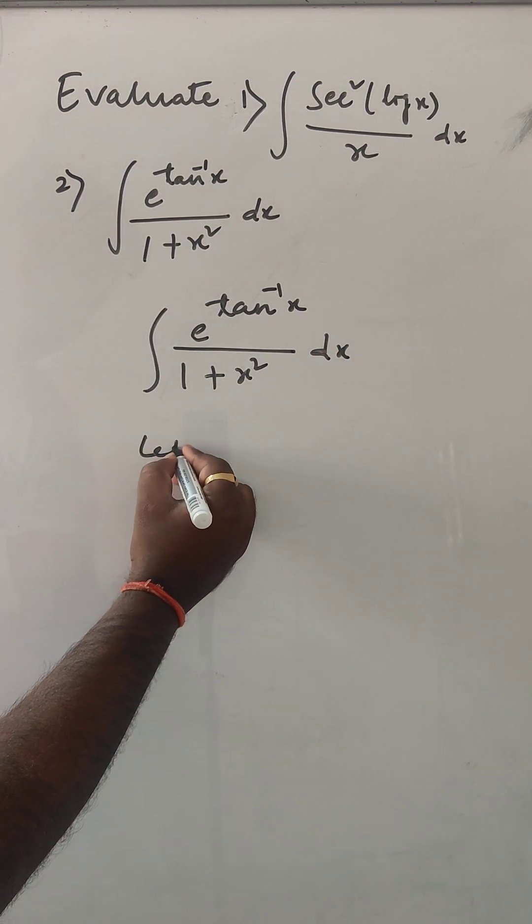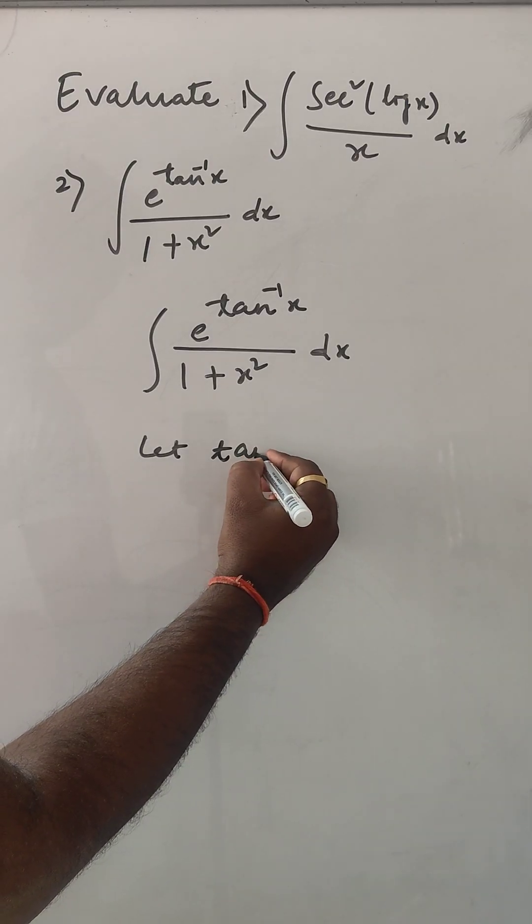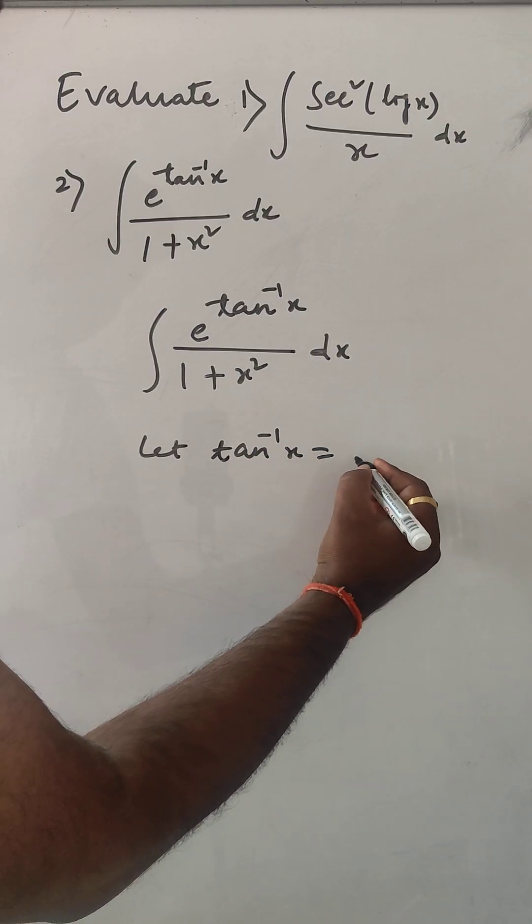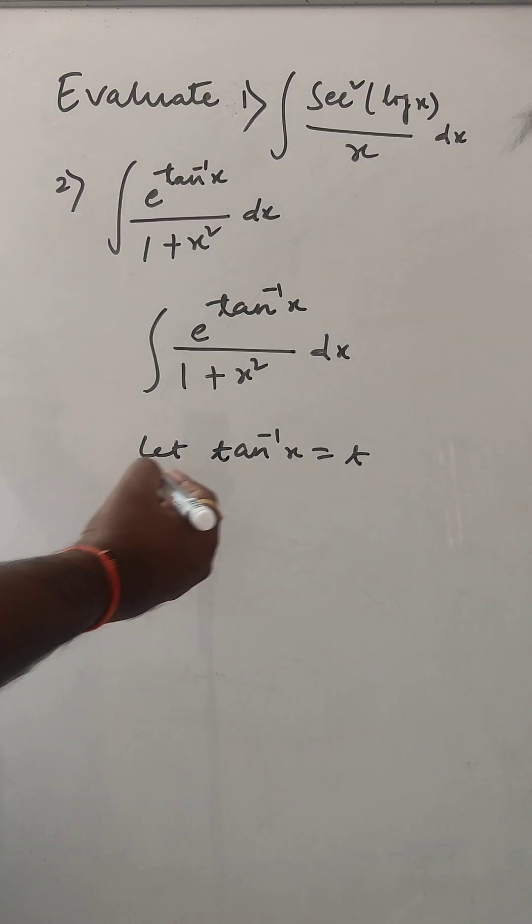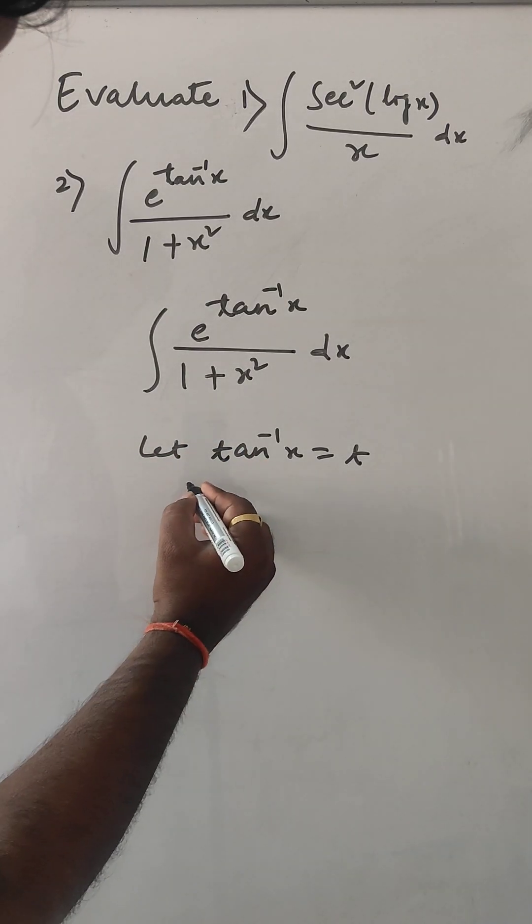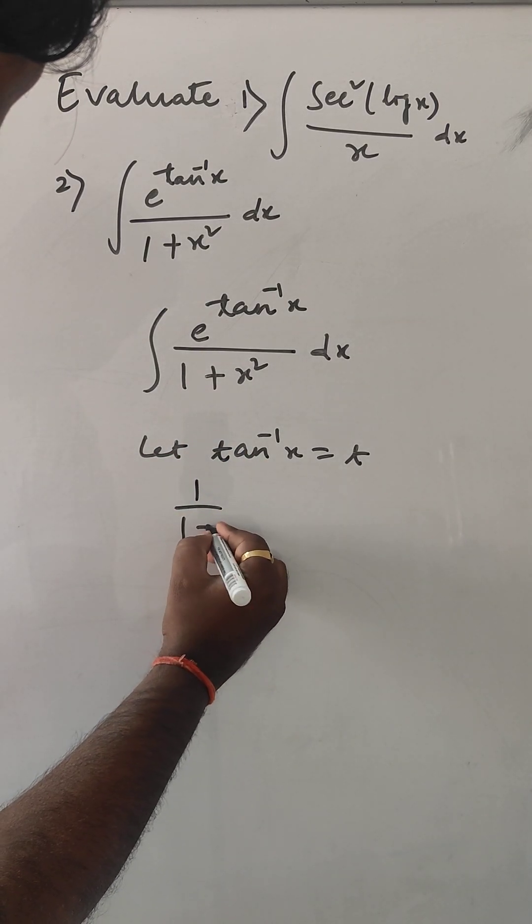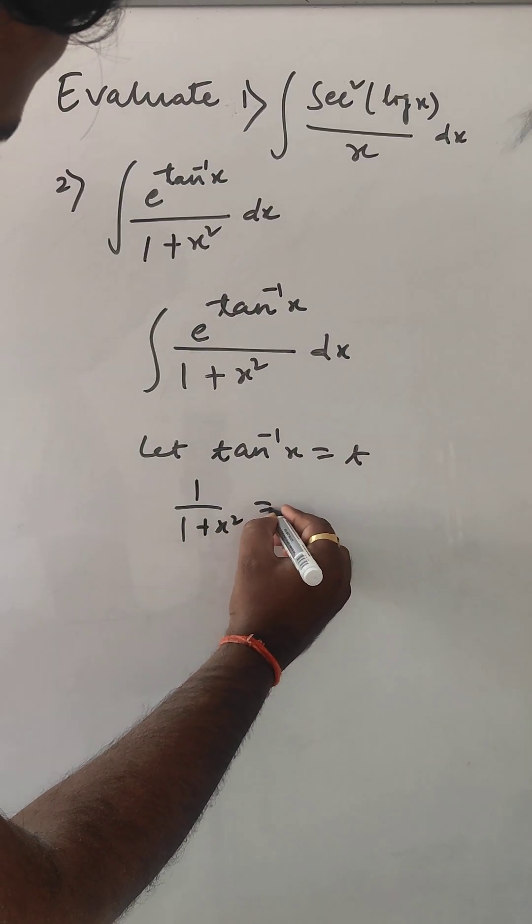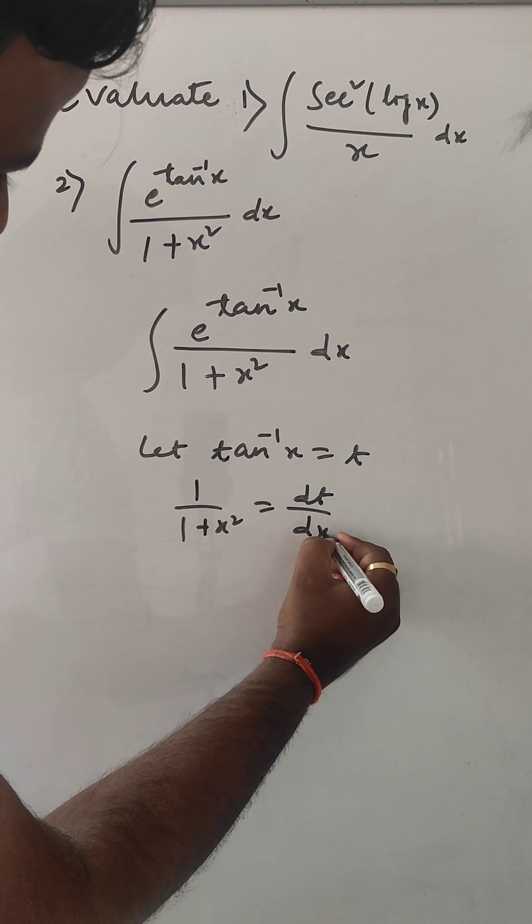So we can let tan inverse x equal to t. Then we can do the differentiation. It is 1/(1 plus x square) equals dt/dx.